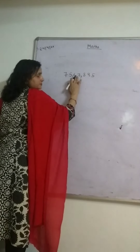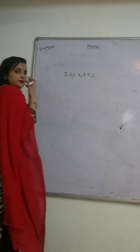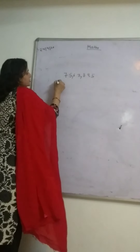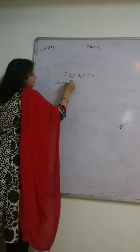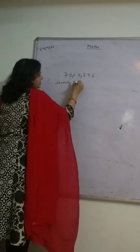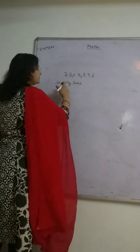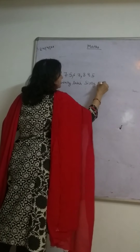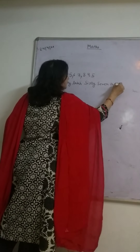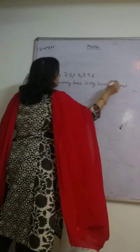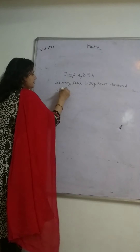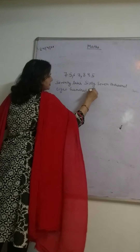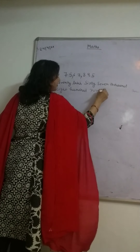As you know, this separates the lakh period, the thousands period, and the ones period. It is very easy to write the number name. For example: 75 lakh, 67 thousand, 895. So the full number is 75,67,895.